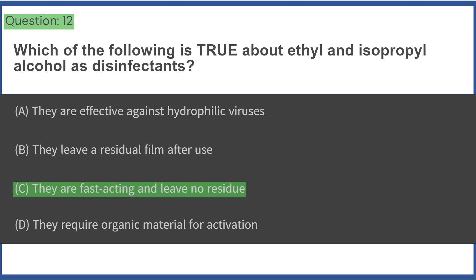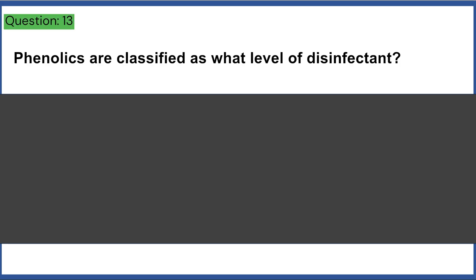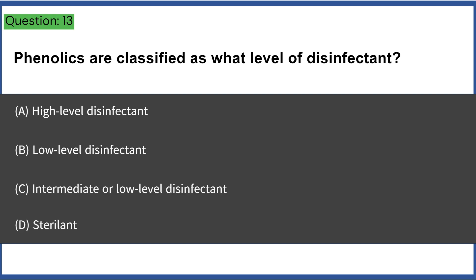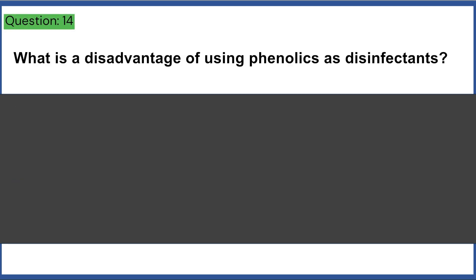Phenolics are classified as what level of disinfectant? a) high-level disinfectant, b) low-level disinfectant, c) intermediate or low-level disinfectant, d) sterilant. Answer: C, intermediate or low-level disinfectant.